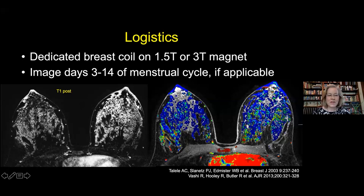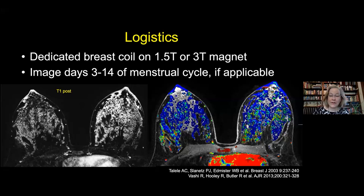Here's a good example: this patient has a lot of marked background enhancement. This is our kinetic map—a color-coded map that puts blue on less worrisome areas and red on areas that might be more worrisome, though red is also seen in the heart. This patient couldn't be controlled for her menstrual cycle because she's currently lactating. Lactational changes are challenging with breast MRI and will make it more difficult to evaluate a patient with a new cancer diagnosis; the sensitivity may be somewhat lower.